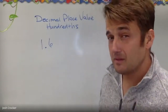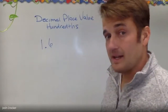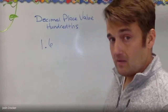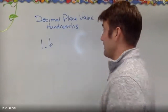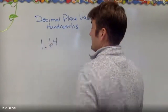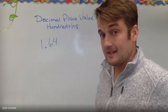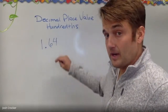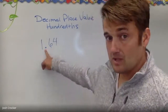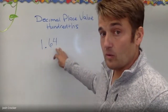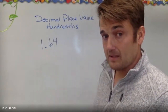Now I can be even more exact by going to the next place value, the next spot, and I might say I have sixty-four hundredths. So this number now says one and — for the decimal place we just say 'and' — sixty-four hundredths slices of pizza.